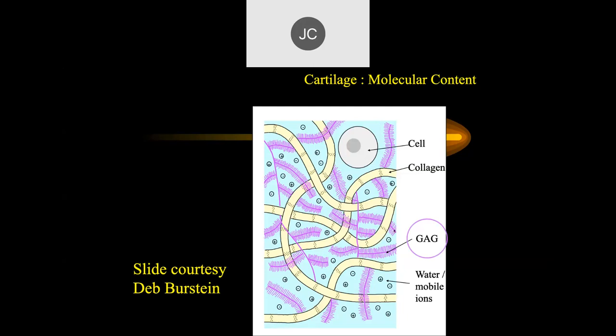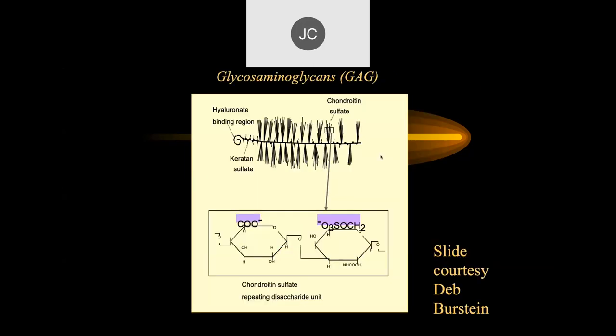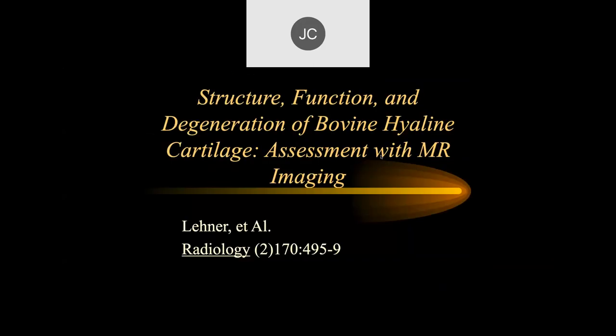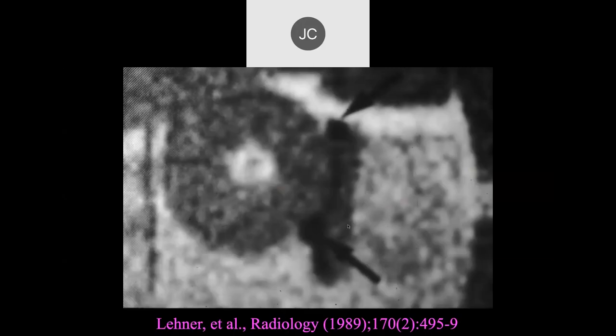These are the glucosaminoglycans and then the collagen and the cells, the major elements here. So let's talk a little bit about how this functions. This was a study done by MR in the very early days of MR, as you can see here, where they took basically a bar, pressed it against a cow's patella articular cartilage.